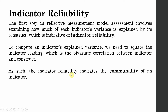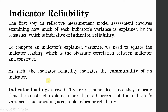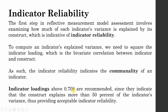The indicator reliability indicates the commonality of the indicator. Indicator loadings above 0.708 are recommended, since they indicate that the construct explains more than 50% of the indicator's variance, providing an acceptable indicator reliability.